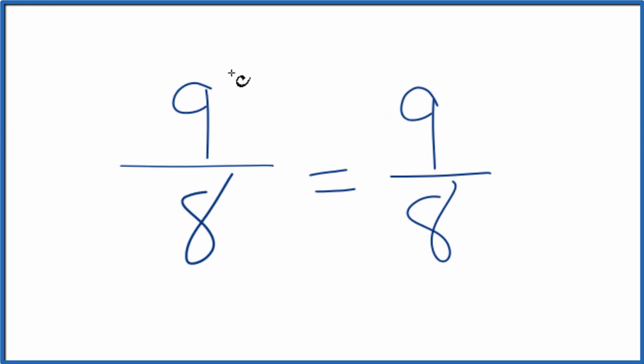What that means is that the fraction 9 eighths here, it's already reduced. We can't simplify this any further. Do note that it is an improper fraction. The numerator is larger than the denominator, so we could convert it to a mixed number.